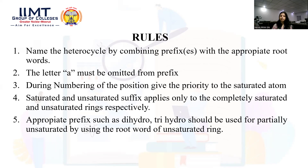Rule 4: Saturated and unsaturated suffixes apply only to completely saturated and completely unsaturated rings respectively. For partially saturated rings, no suffix is applied. Instead, the prefix 'dihydro' should be used for a partially unsaturated ring using the root word of the unsaturated form. If three hydrogens are added, then 'trihydro' is used.